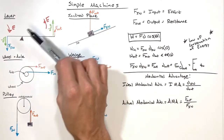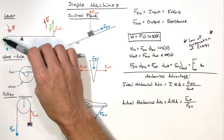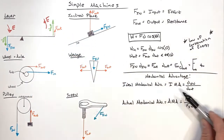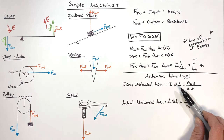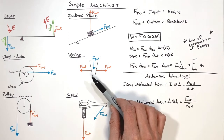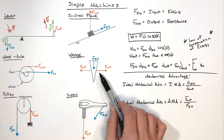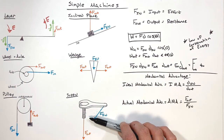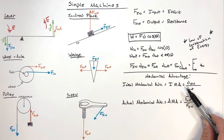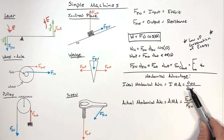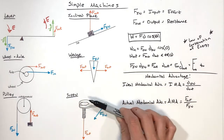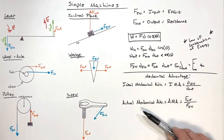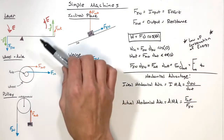If the input and output displacements are equal, we have an IMA of one. If the input side moves twice as far as the output side, the IMA is two. The question of what's a 'good' IMA depends on what you're trying to accomplish. If you're splitting wood with a wedge, you want to move the wedge a long ways to split the wood just a little bit. Similarly with a screw — turning the end of a wrench a long distance moves the screw only a little, but produces an enormous clamping force.